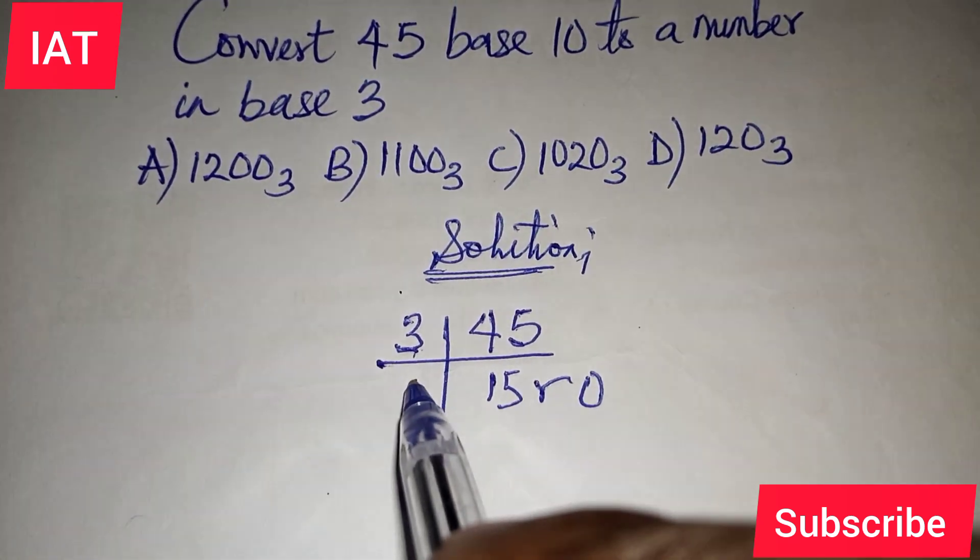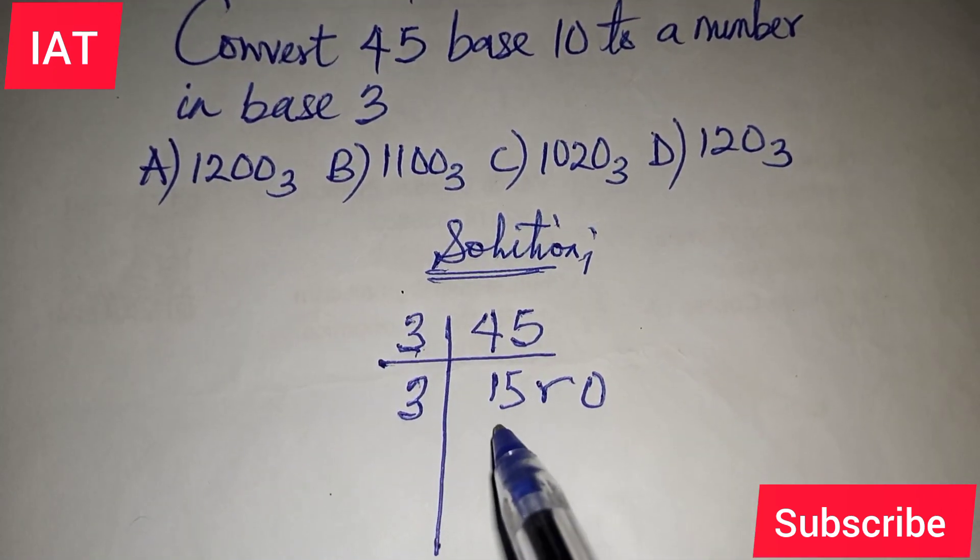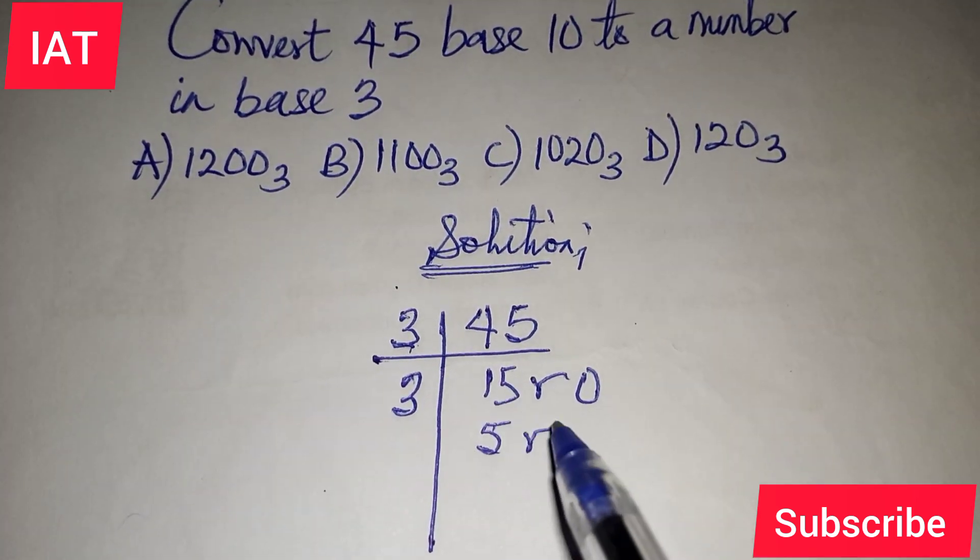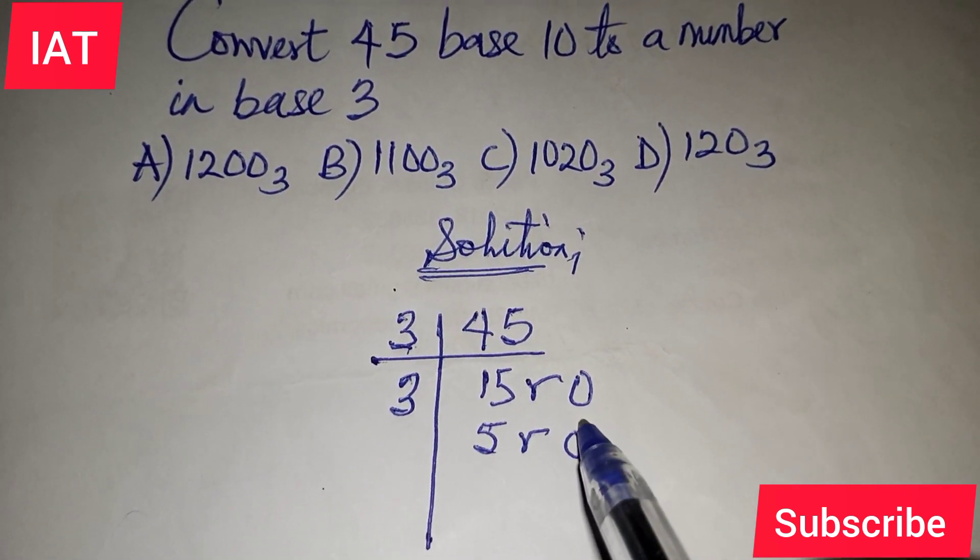You use 3 throughout the process. 3 into 15 goes 5 times and then there is no remainder because 3 times 5 essentially gives us 15. So we also put remainder 0.